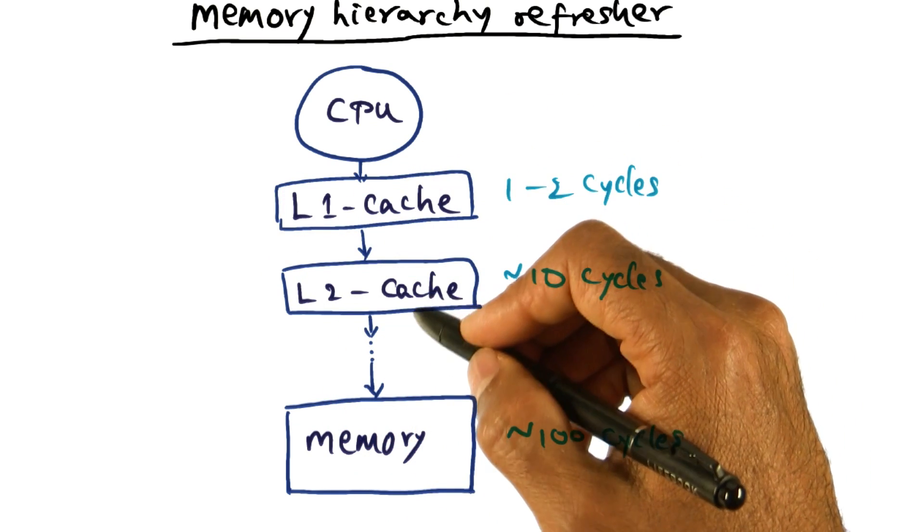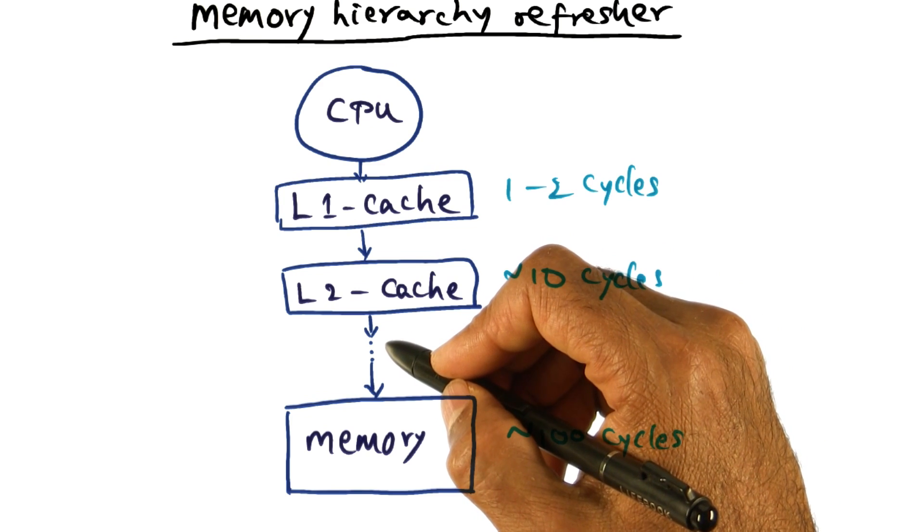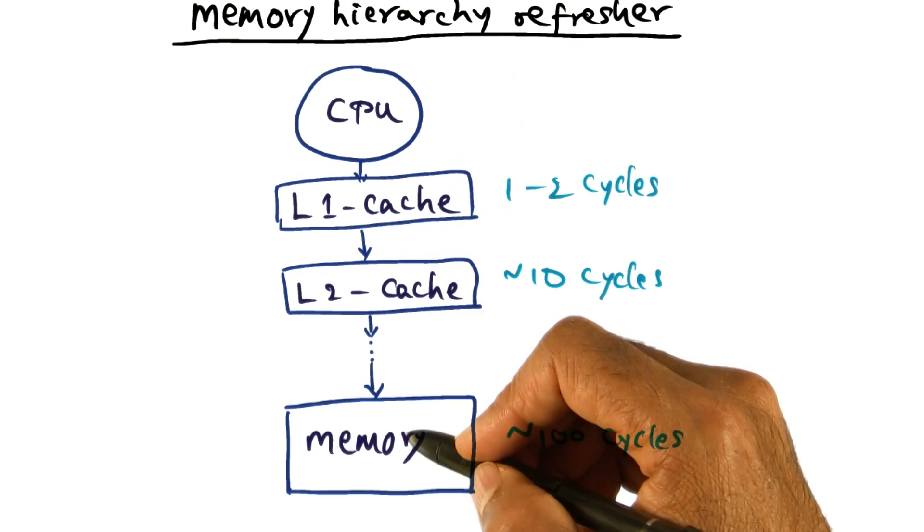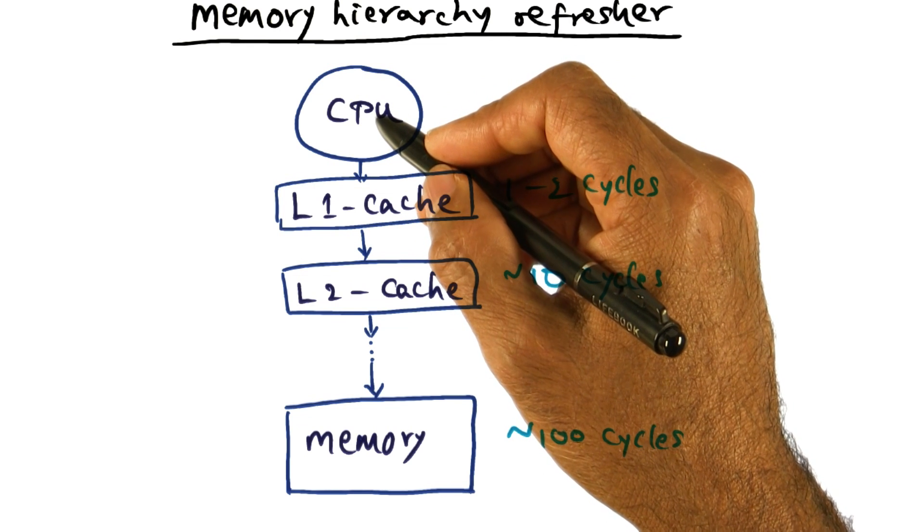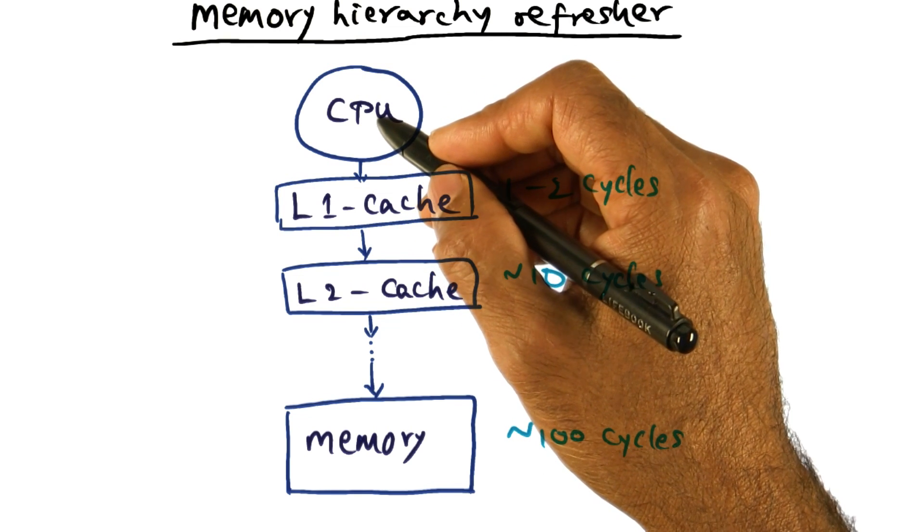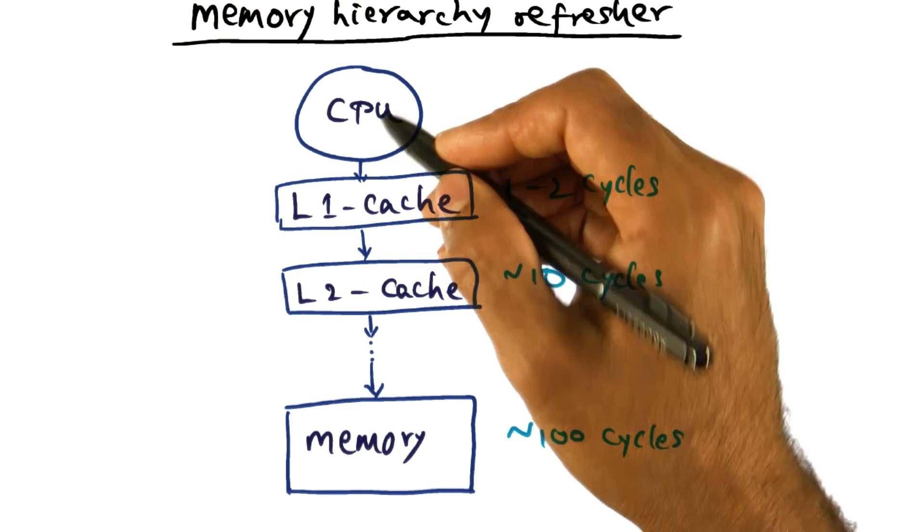If not in the L1 cache, at least in the L2 cache. If not in the L2 cache, at least in the L3 cache, so that it doesn't have to go all the way to the memory in order to get the instructions and data for the currently running thread. That's an important point to think about.